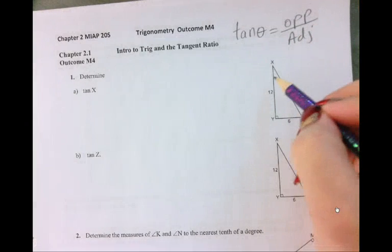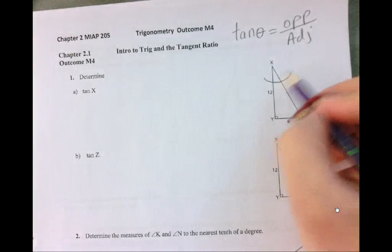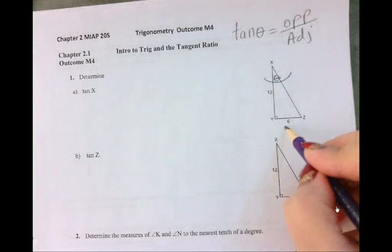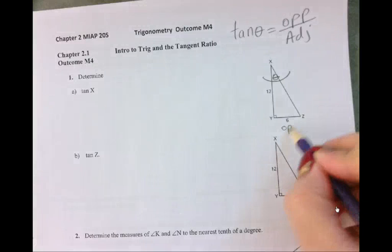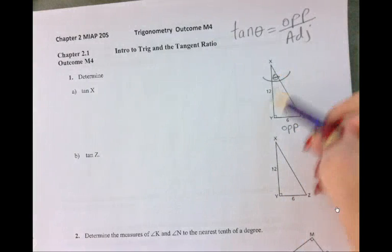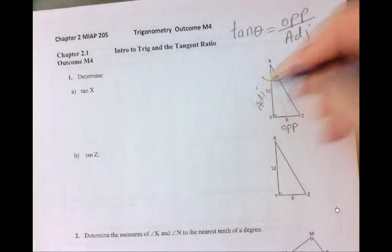Now, what's the important angle for this first question here? X. So let's label this with our theta so we know that's important. And then what is this side going to be called? That's opposite because it's opposite to that angle. And then what is this side 12 going to be? That's going to be your adjacent.